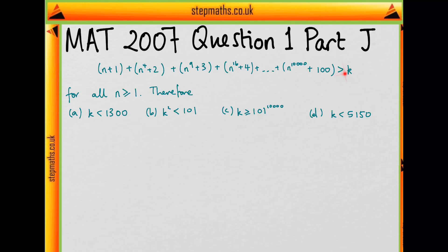So if k is less than this sum for all n greater than or equal to 1, then k has to be less than the smallest value that this sum takes.